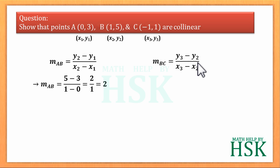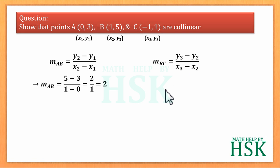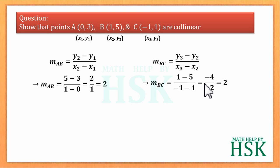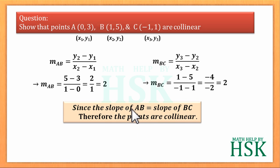Placing the values of x2, y2 and x3, y3 into the formula, we get m_BC = (1 - 5) / (-1 - 1) = -4 / -2 = 2. Since the slope of line segment AB equals the slope of line segment BC, hence the points are collinear. In this manner we use the slope formula to prove that points are collinear.